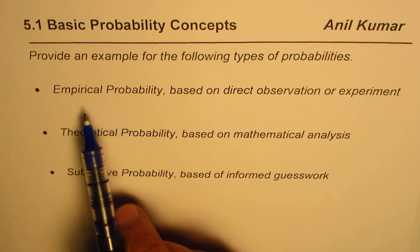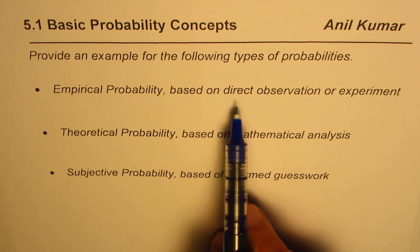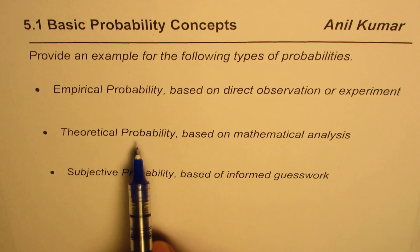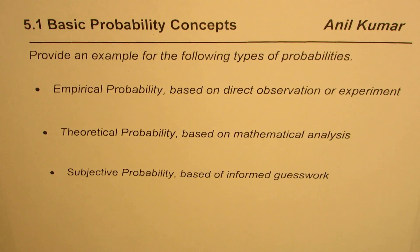The first one here is empirical probability which is based on direct observation or experiment. Then we'll talk about theoretical probability which is based on mathematical analysis and then move on to subjective probability which is based on informed guesswork.